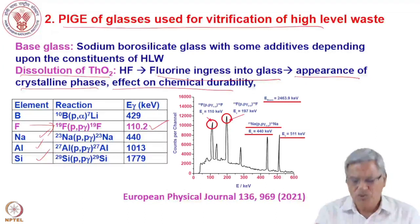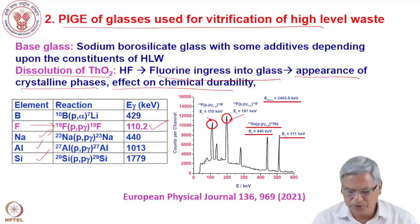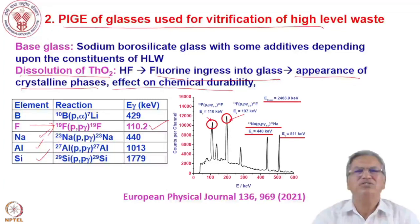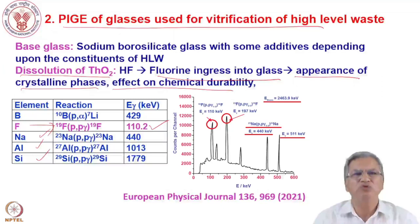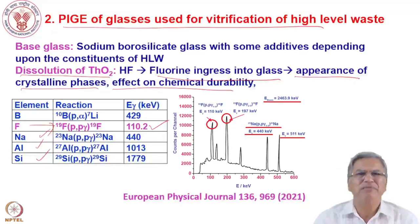These nuclear analytical techniques — NRA and PIGE — are not meant for routine analysis but for very specific applications in high-technology areas. They are often used in combination with other techniques to understand mechanisms and qualify high-technology materials. Ion beams from accelerators can be used for characterization of materials in many important applications.